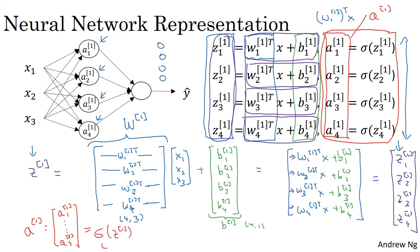And this is going to be sigmoid of z1, where this now has been implementation of the sigmoid function that takes in the four elements of z and applies the sigmoid function element-wise to it. So just to recap, we've figured out that z1 is equal to w1 times the vector x plus the vector b1. And a1 is sigmoid times z1. Let's just copy this to the next slide.